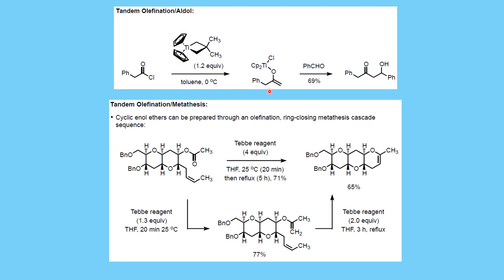Another example: taking an acid chloride gives rise to a titanocene intermediate, and if an aldehyde is added, it attacks the aldehyde to give the aldol product — a tandem olefination-aldol reaction. The last and most important example uses a precursor for a marine natural product synthesis: four equivalents of Takai reagent are used, methylenation takes place, and the next step is ring-closing metathesis at that position to form a six-membered compound. This is a tandem olefination followed by ring-closing metathesis.